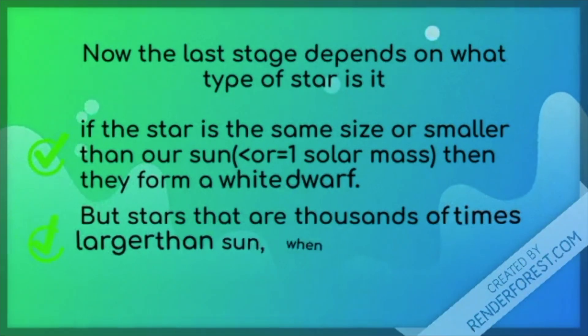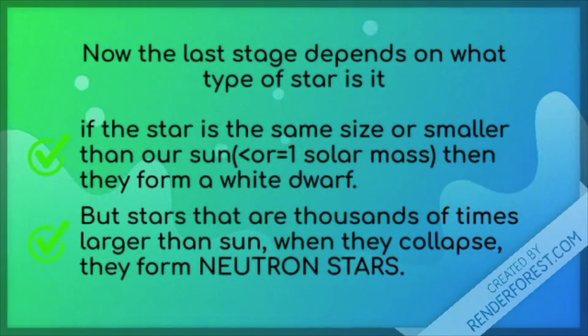Now, the last stage of the star depends on what type of star it is. If the star is the same or smaller than the sun, then they form a white dwarf. But if the star is a thousand times larger than the sun, when they collapse, they form neutron stars.